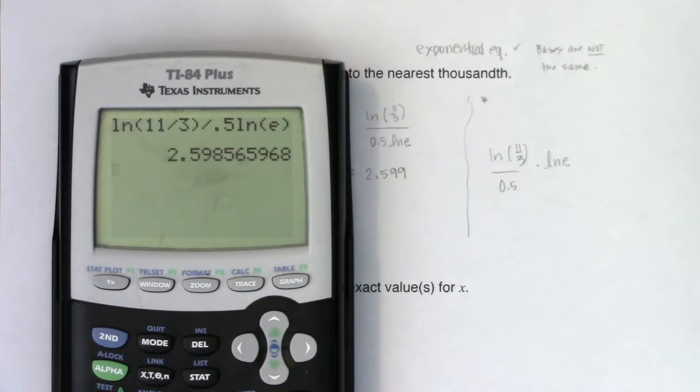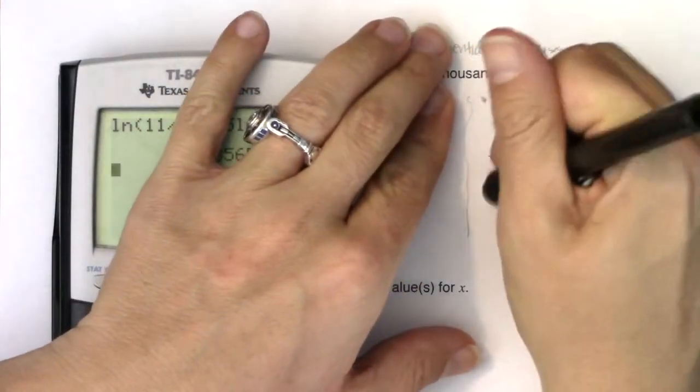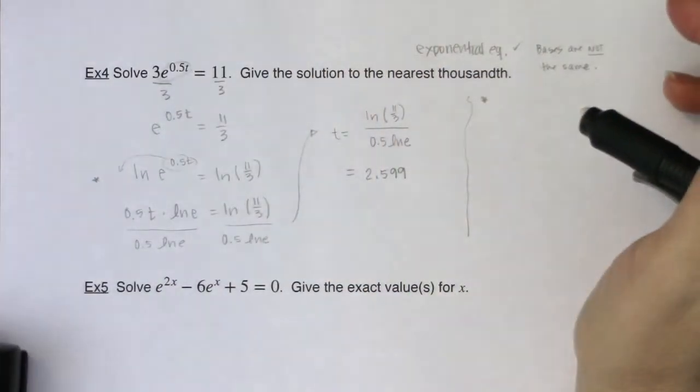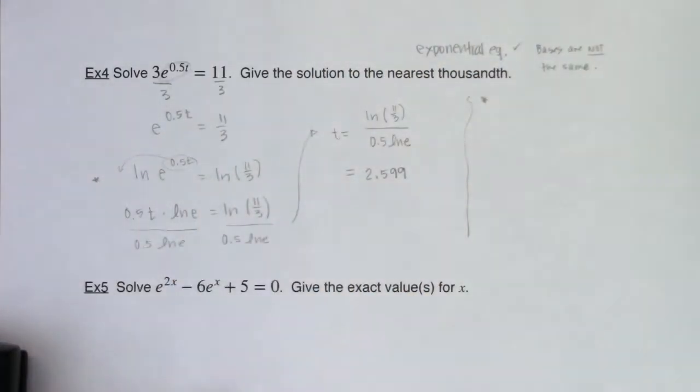Now, why is it giving me the same answer? Because you're like, hey, Miss A, you just told me I had to put parentheses around the denominator. Well, let's talk about what the ln e represents. So why does making that little typo on your calculator not affect your answer?